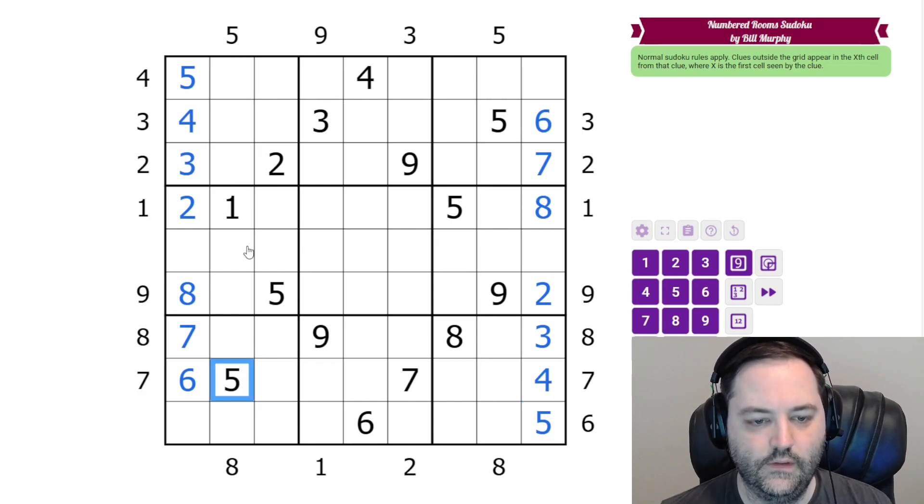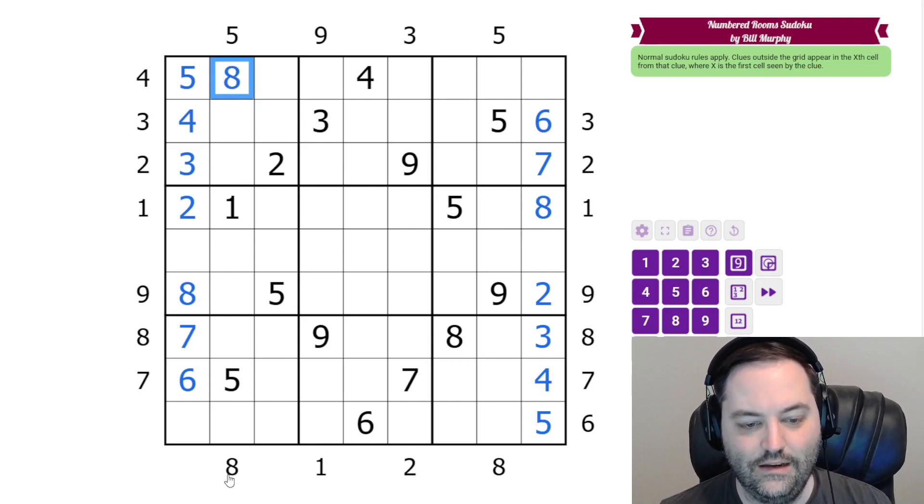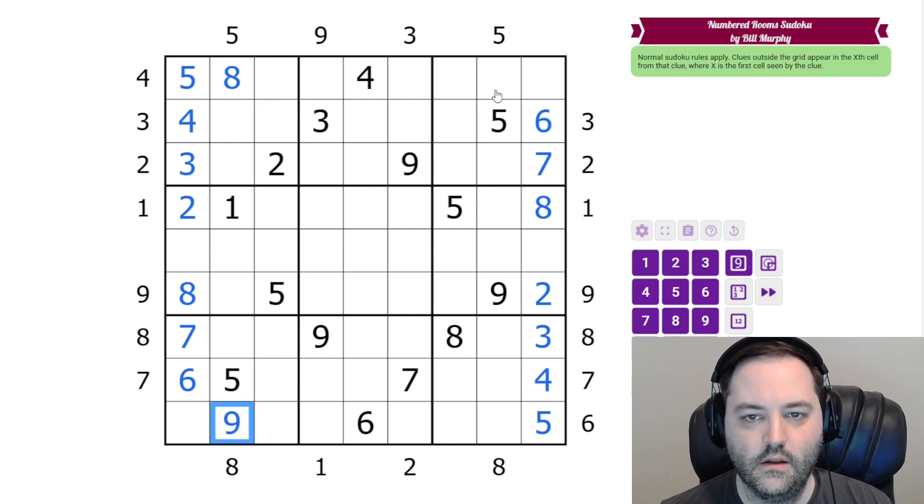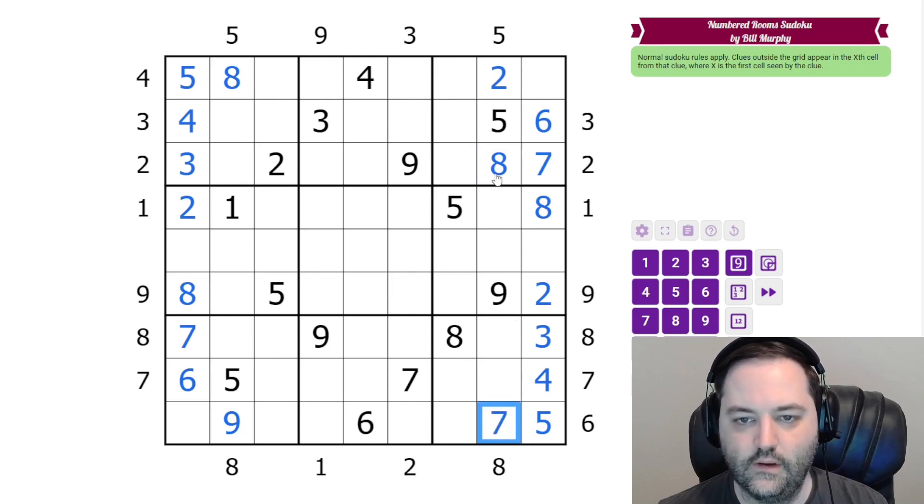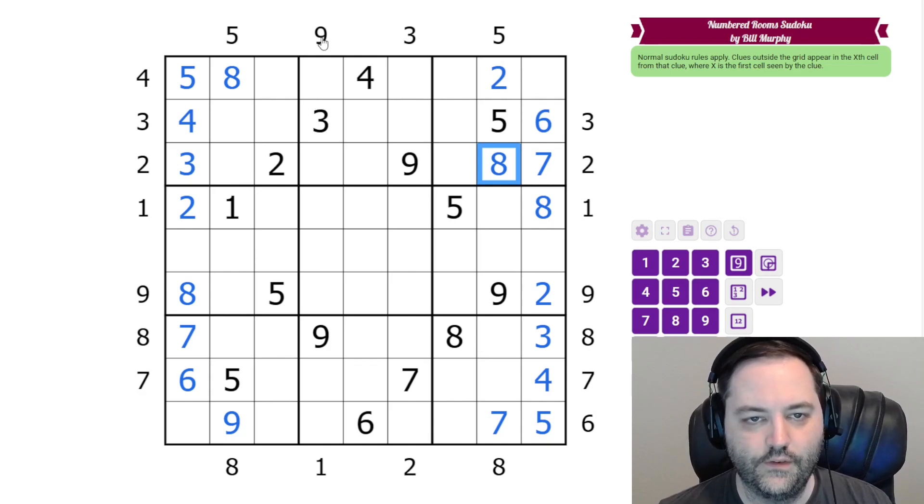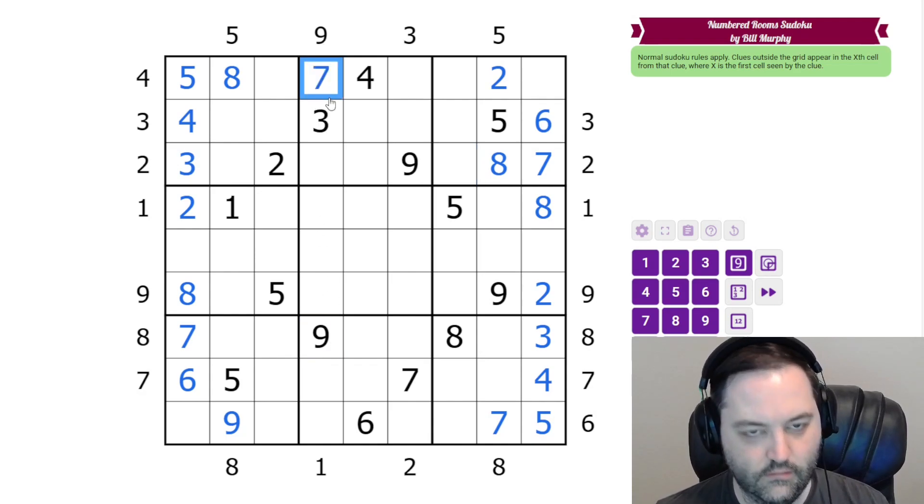5 in this column is in the 8th cell, so that goes there. And now 8 in this column from this direction is in the 9th cell, so this is going to be a 9. The 5 here is in the 2nd cell in the column. We don't have the 8 yet, but by Sudoku the 8 has to go here. That's the only place left for it. So this is going to be a 7 because the 8 is in the 7th cell. In this column 9 is in the 7th cell, so that's a 7.